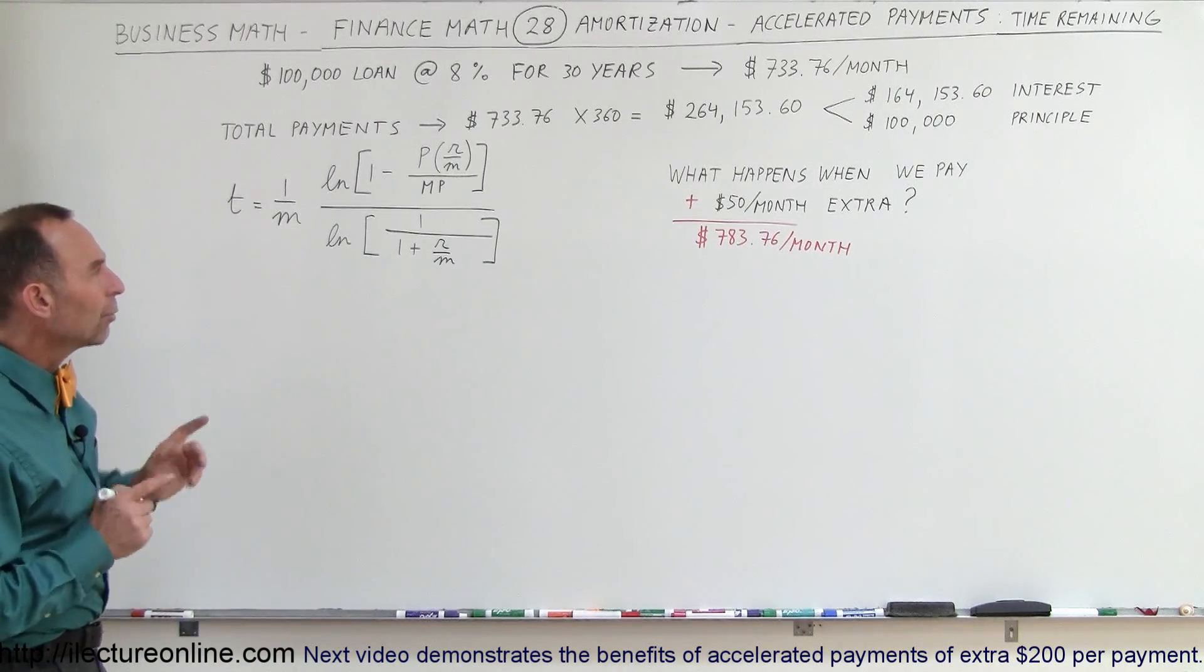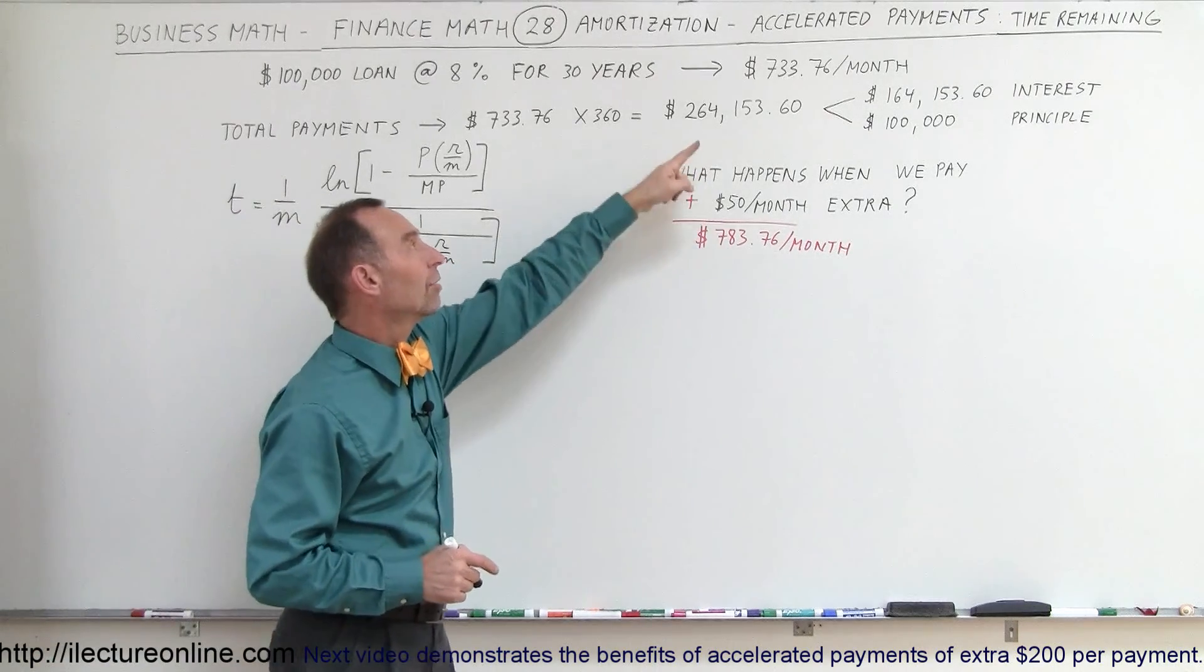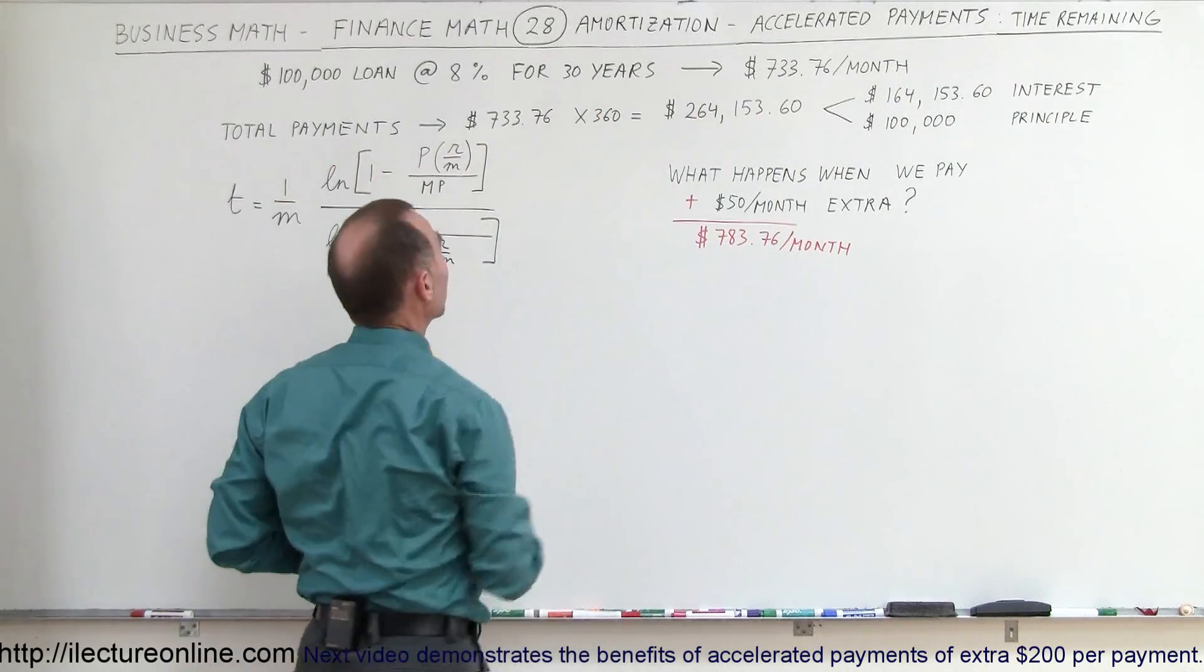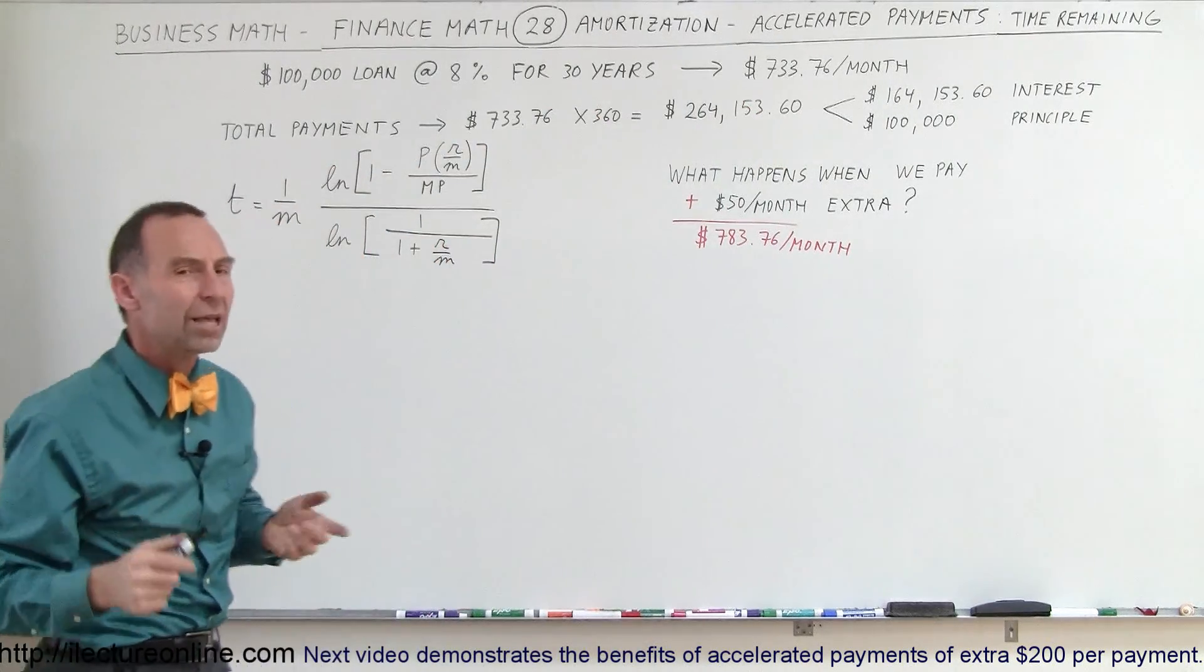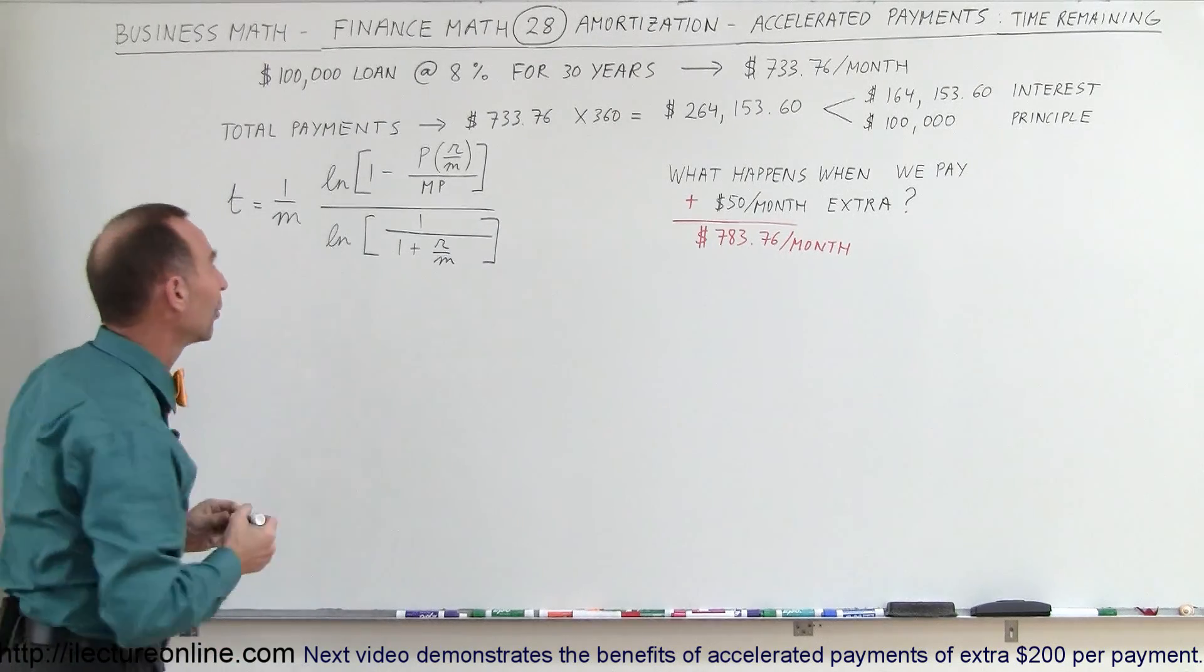So that equation will allow us to calculate the time remaining if we pay this much money instead of that much every month because if we pay this much and we plug it in there, we'll get 30 years. So what will be the number of years to pay the loan with just $50 extra per month? You'll be surprised what the difference would be.